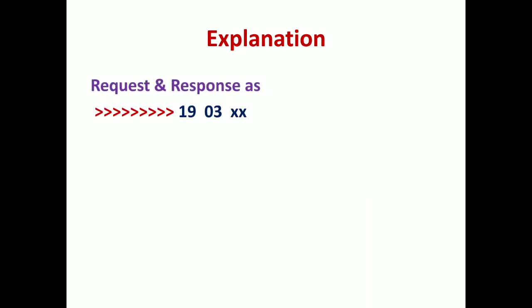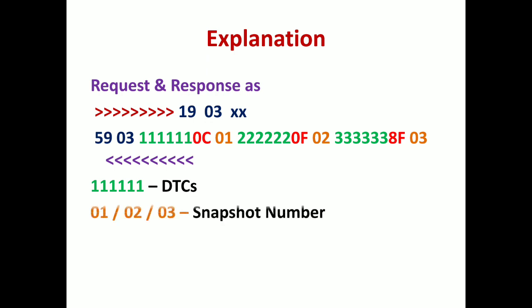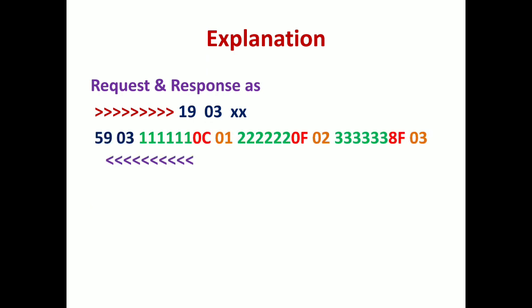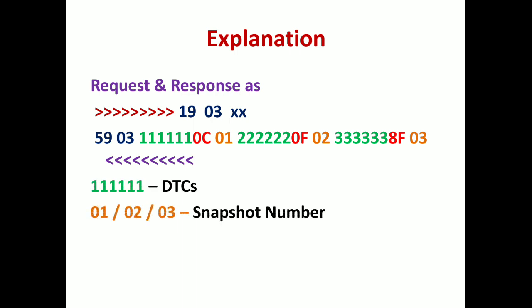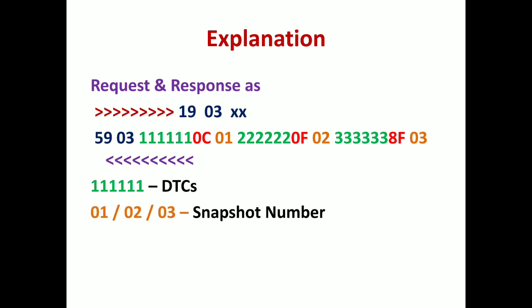For the request and response: 19 is the service ID and 03 is the sub-function. XX is the DTC snapshot number. In the response, 5903 is sent, and 111111 is the DTC — the number of DTCs present. Then 01, 02, or 03 is the snapshot number. 0C, 0F, and 8F represent the DTC status — for every DTC there is a DTC status, indicated by the fourth byte of the DTC sequence.